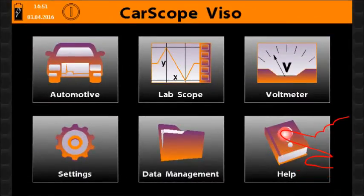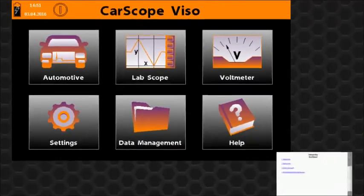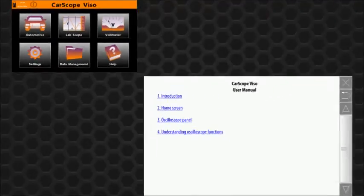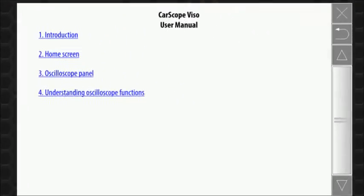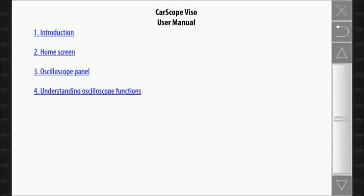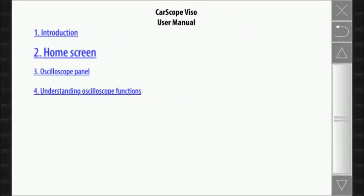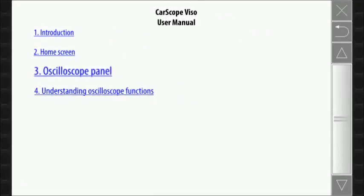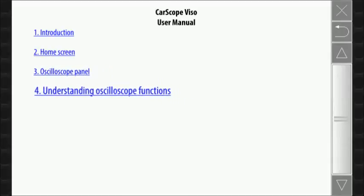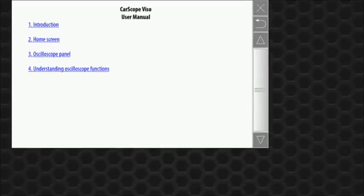The help function icon opens the CarScope Viso user manual. It is divided into chapters composed of pages. Navigation is similar to a website with links between the pages.